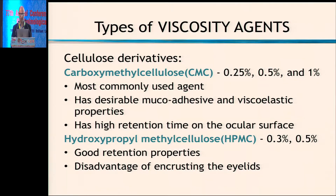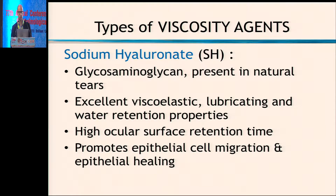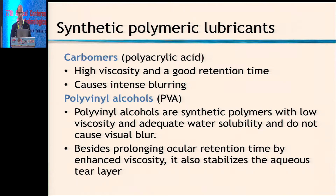HPMC is a very good lubricant, available as 0.3 and 0.5%, with good retention properties, but it tends to form crusts on the eyelashes and eyelids, which can be disturbing. Nowadays the popular one is sodium hyaluronate — a glycosaminoglycan already present in natural tears. It's an excellent viscoelastic used also in cataract surgery, with lubricating and water retention properties, higher ocular surface retention time, and it promotes epithelial cell migration and epithelial healing. The only problem is it should come from a pure source; otherwise impurities can cause toxicity.